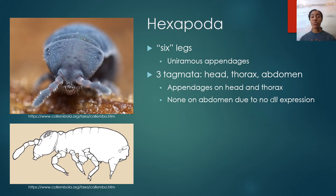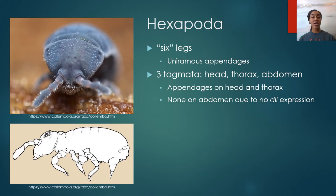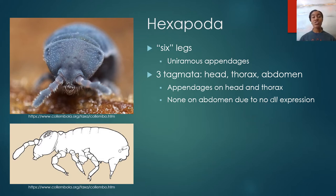The hexapod body plan is composed of three tagmata: the head, the thorax, and the abdomen. All appendages will be present on either the head or the thorax segment — there are no appendages on the abdomen. This is due to a lack of expression of the DLL, or distalus, gene. We discussed this gene in the first arthropod lecture; it plays a role in whether an appendage will be uniramus or biramus. In hexapods, this gene is not expressed on the abdomen at all, so they do not develop appendages there.